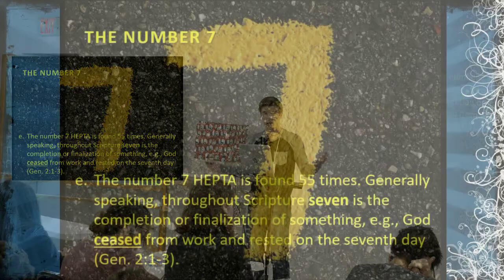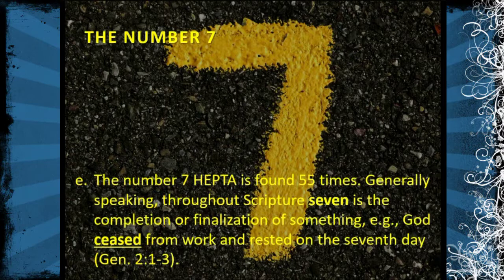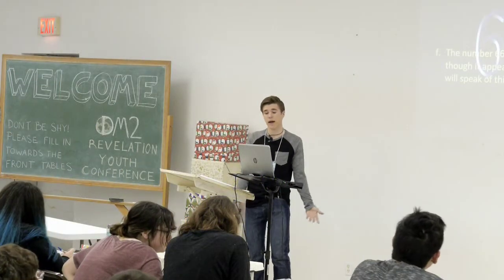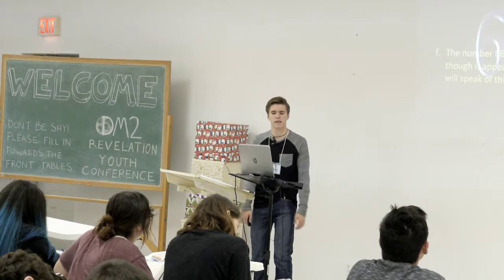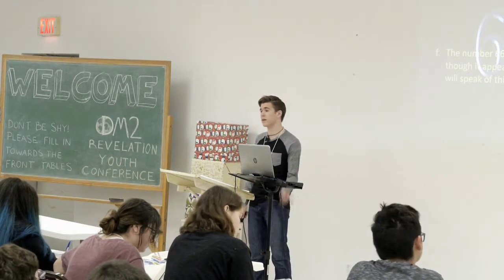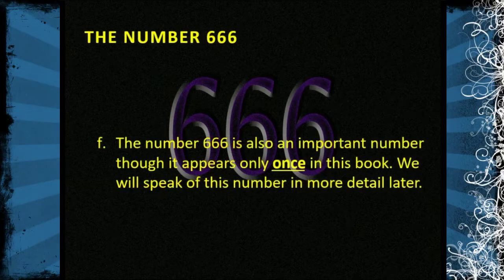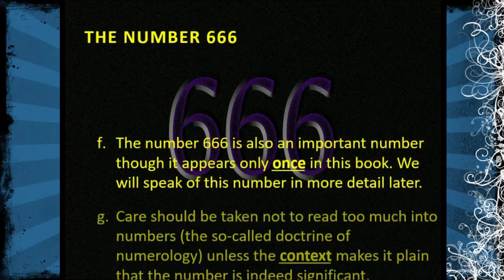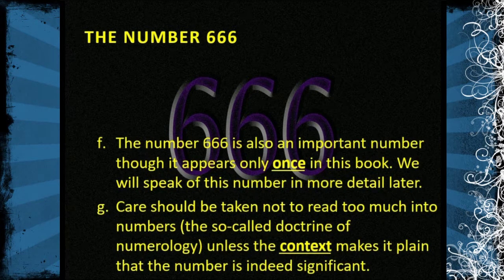The word seven is found 55 times throughout Revelation. This is a common number throughout the whole Bible. Generally speaking, seven is the number of completion or finalization of something — God ceased from his work and rested on the seventh day, as in the story of Genesis. Finally, a number you've probably heard of before is 666. It only appears once in the book, and we'll speak of it in more detail later. Care should be taken not to read too much into numbers — the so-called doctrine of numerology — unless the context makes it plain that the number is indeed significant.